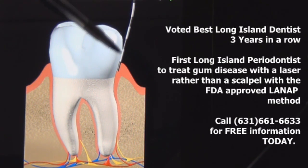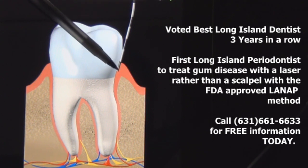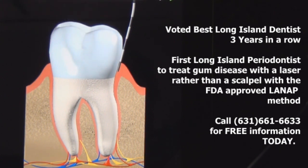When we measure the pocket between the tooth and the gum, this is where we measure this space, and that space should normally measure two to three millimeters.